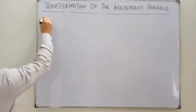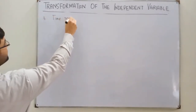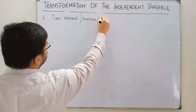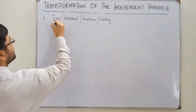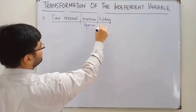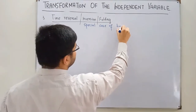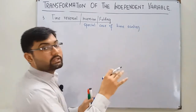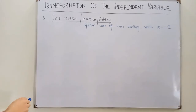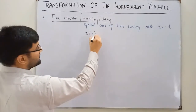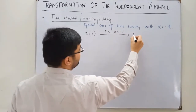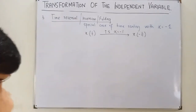The third and final transformation is time reversal, also called time inversion or folding. This is actually a special case of time scaling with α equal to negative one. So if we have x(t) and apply time scaling with α = −1, we get the function x(−t).